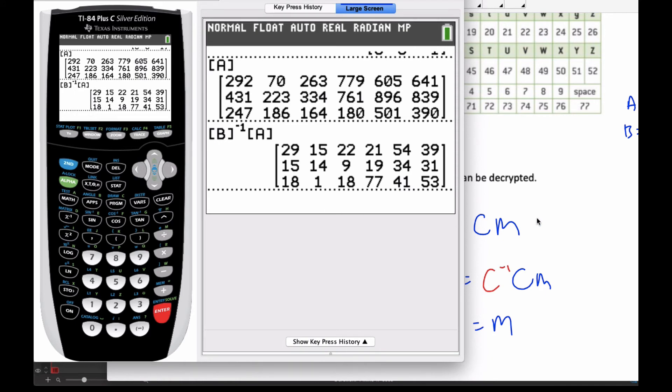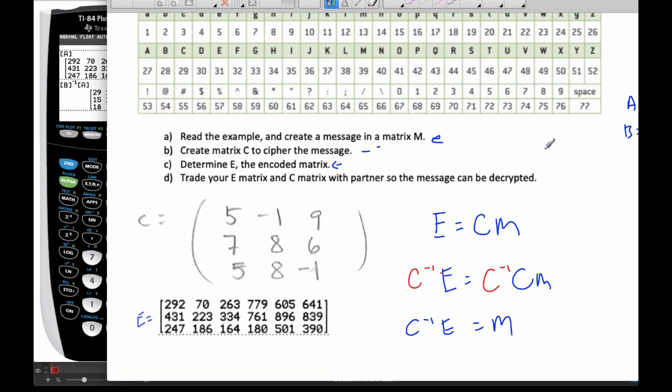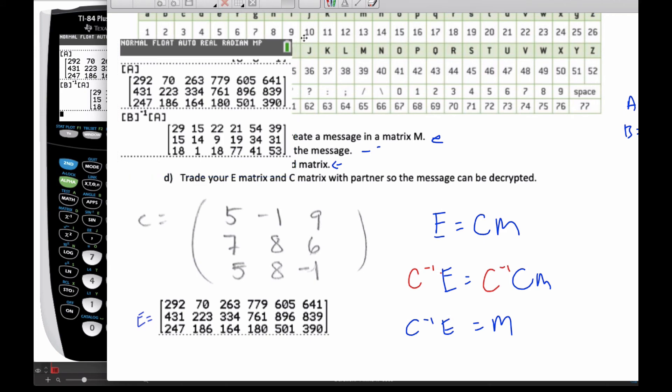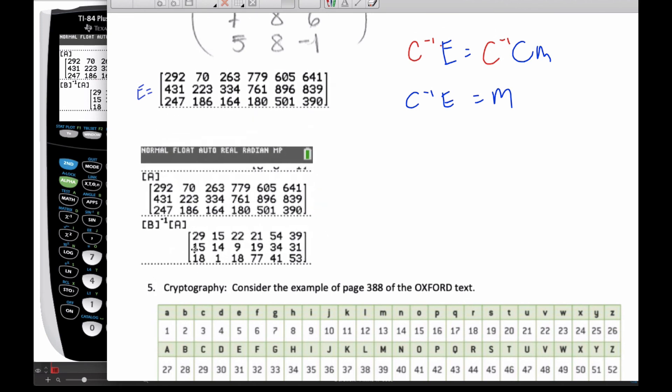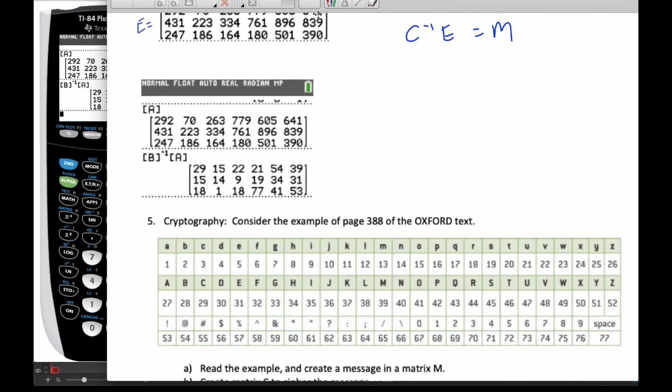Here is my matrix. So then I can come over here to my code. Here is my M matrix. Now it's a matter of putting the letters and the numbers together. So 29 is a capital C, 15 is an O. I'll let you pause the video and I'm going to fill it in.